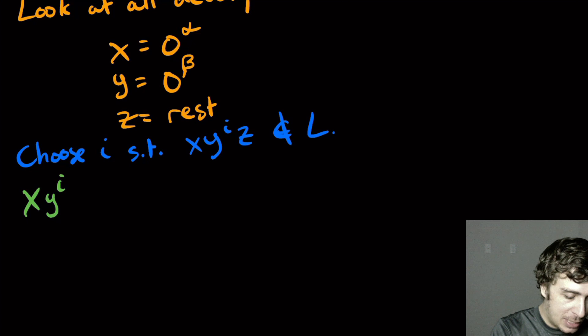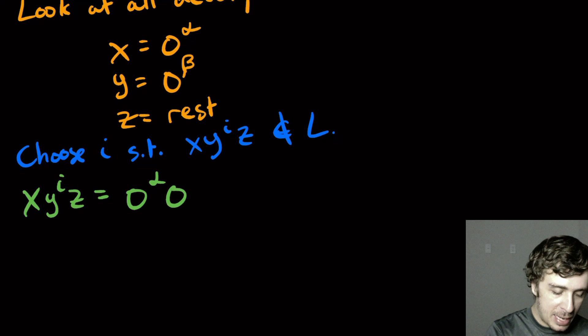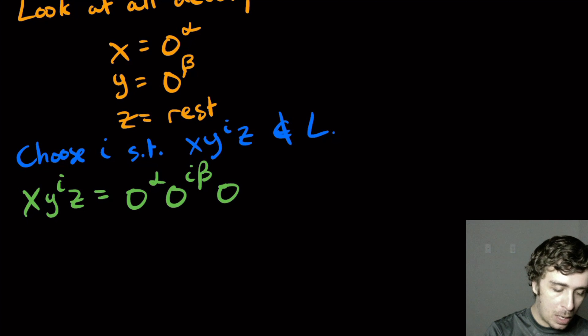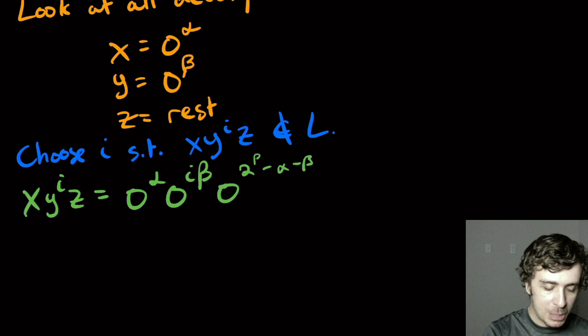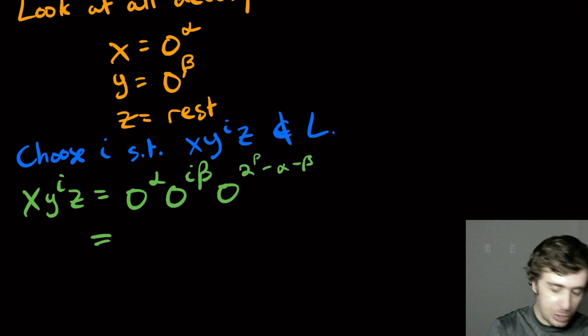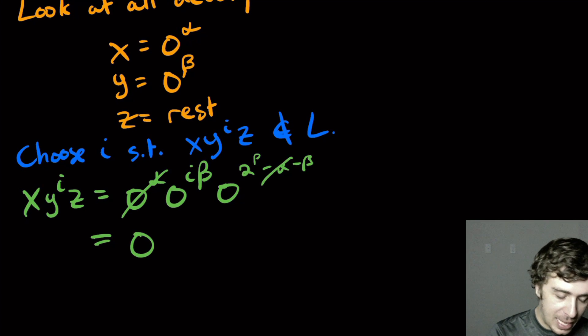So what is X Y to the I Z? That is equal to just copy down the X piece. Then I have I copies of the Y piece, so I times beta number of zeros. And then the Z part. That's going to be two to the power of P minus alpha minus beta, because we had two to the P to start with. The X piece took alpha away and the single Y took a single beta away. And that's the whole string. So since we have a whole bunch of zeros, we can collapse them together to get a single exponent. The alphas are going to cancel, so I'm going to have two to the power of P plus I minus one times beta.